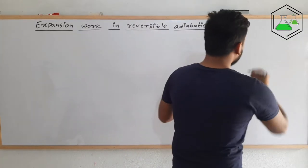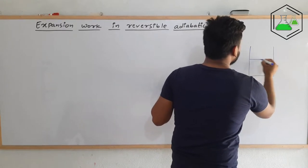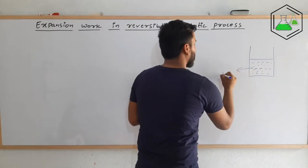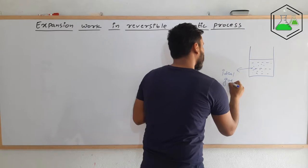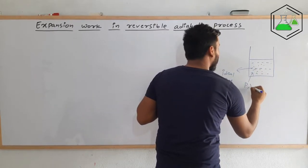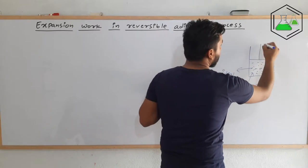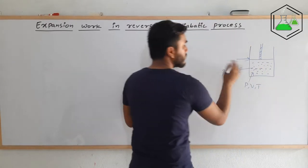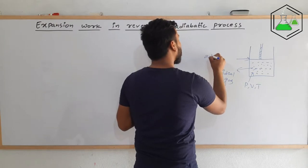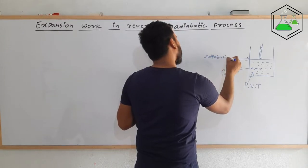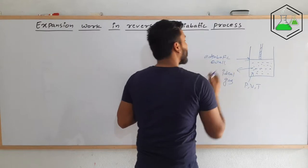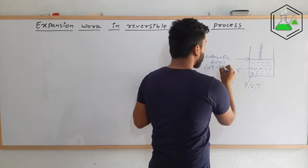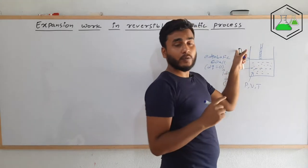Let's consider a cylinder in which ideal gas is kept. The pressure of this ideal gas is P, volume V and temperature T, and it is fitted with a weightless and frictionless piston. The wall used in this cylinder is an adiabatic wall, which means heat energy cannot be exchanged between the system and surrounding. That is, DQ will be equal to zero.